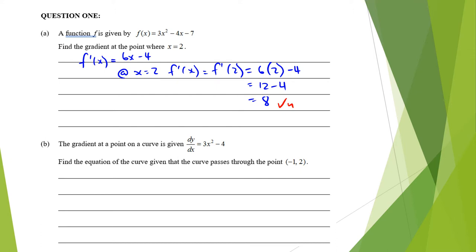Next question: the gradient at the point on the curve is given by 3x squared minus 4. So if we integrate 3x squared minus 4 with respect to x, we get x cubed minus 4x plus c. We get y equals x cubed minus 4x plus c. Remember that plus c.